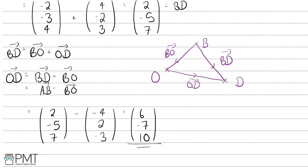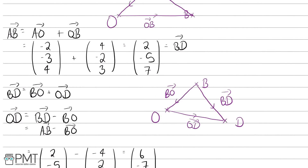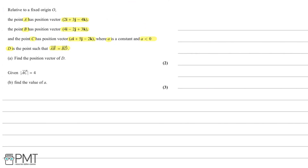In terms of marks for this question, you get one mark for finding the position vector of D, and one mark for finding BD or AB, for a total of two marks. Now let's move on to part B. In part B, we're given that the modulus of AC equals 4, and we need to find the value of a.